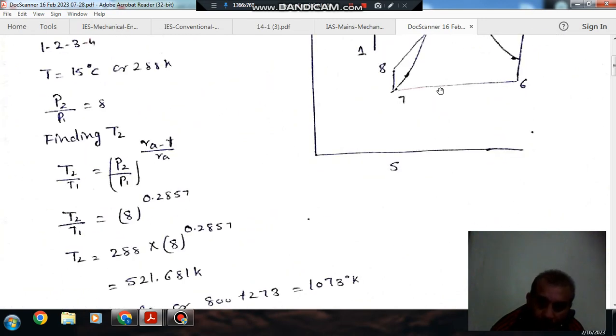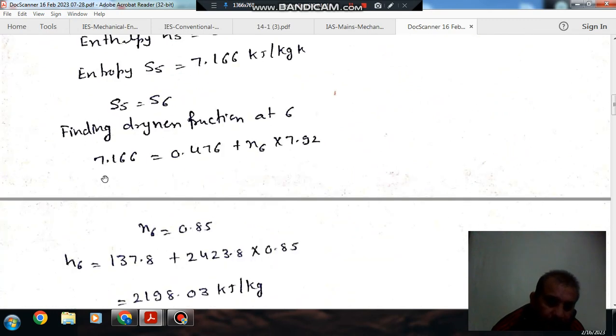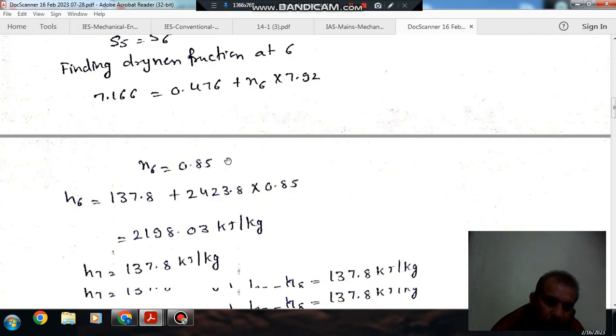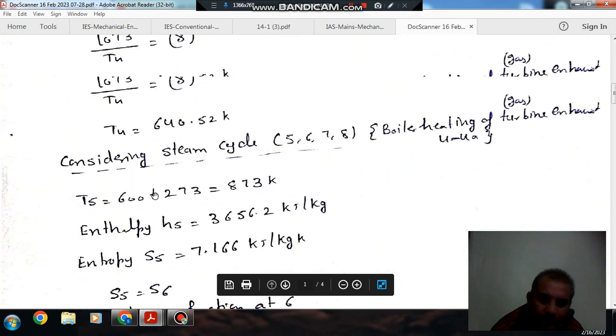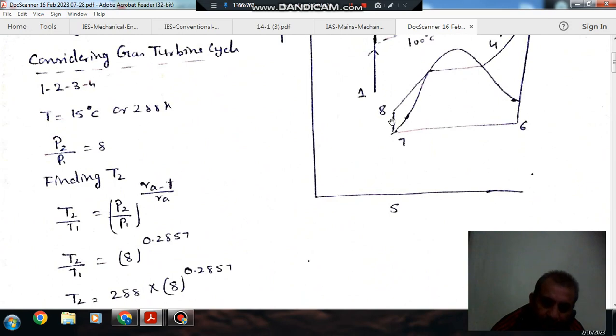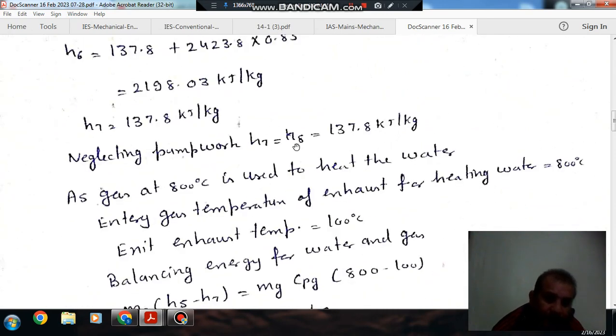And as we can see that here at 6 the steam is wet, you will find the dryness fraction by equating entropy. So this is entropy at 5 and this is entropy at 6. So we can find out x6 dryness fraction and then we can find out H6. H7 is the enthalpy at condenser pressure. And H7 and H8 are approximately the same because we are neglecting the pump work. So we are taking H7 = H8.